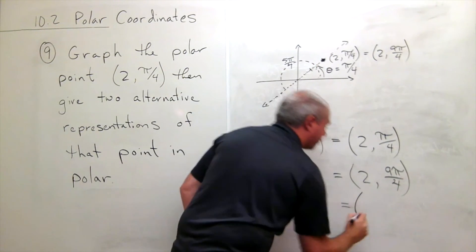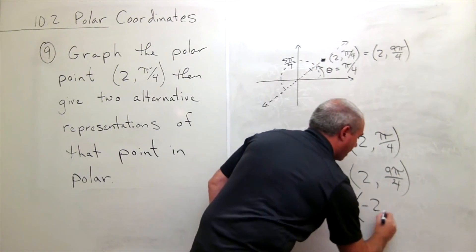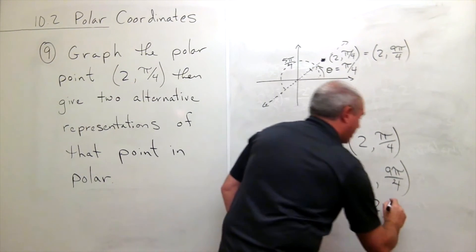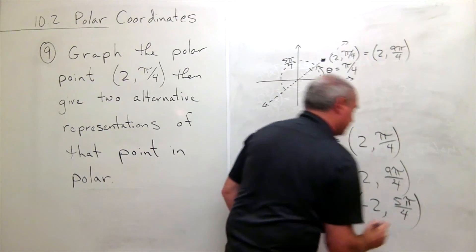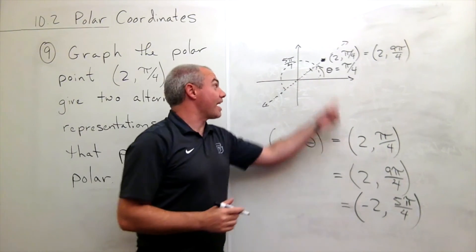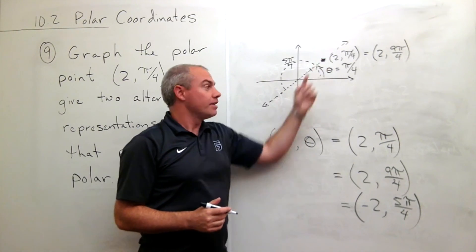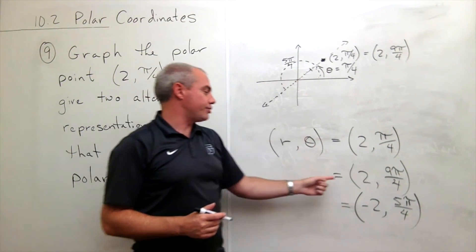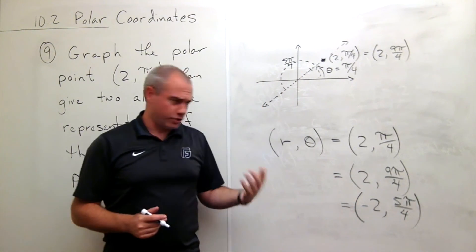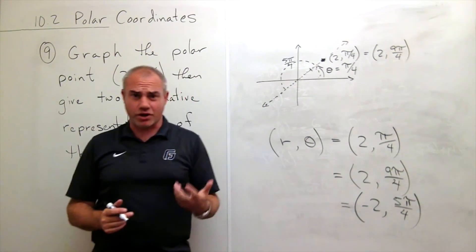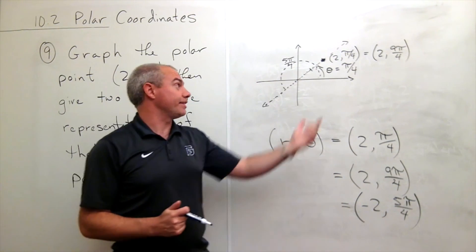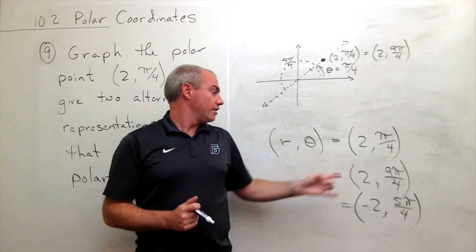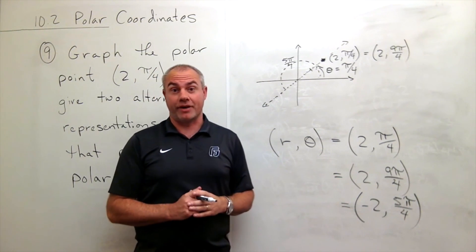So another way that I could write this is (-2, 5π/4). And that's the exact same point as what I have up here. So I graphed the point and showed two different ways to write that point. Certainly there are more. In fact, there are infinitely many ways to write a single point in polar coordinates. These are just two of them.